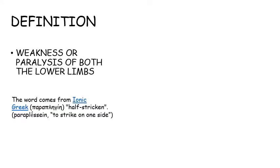Paraplegia is the weakness or paralysis of both the lower limbs. The word comes from the Greek word paraplacin, which means to strike on one side.